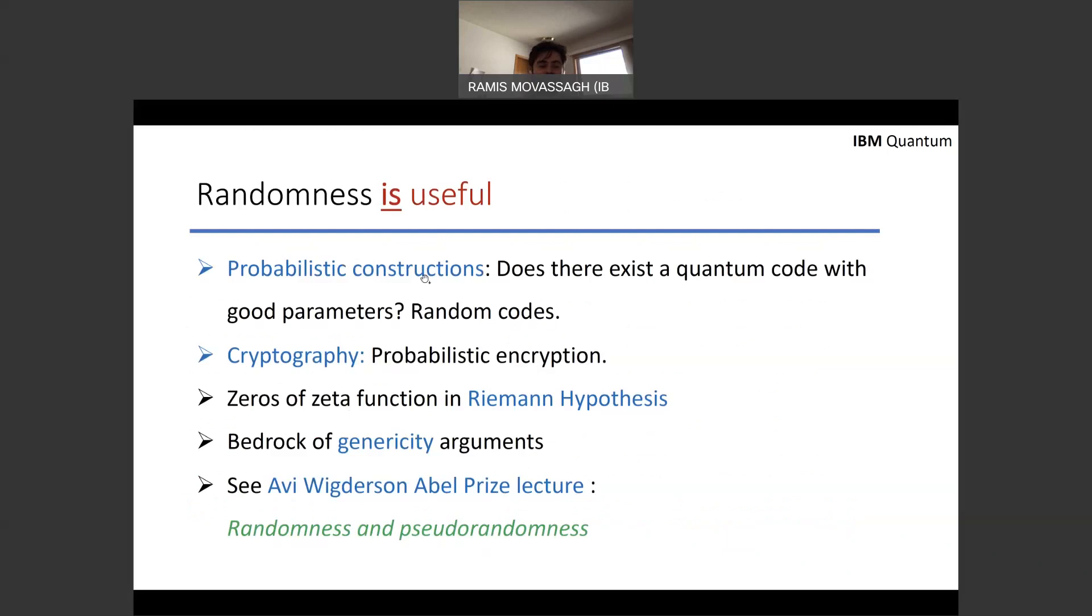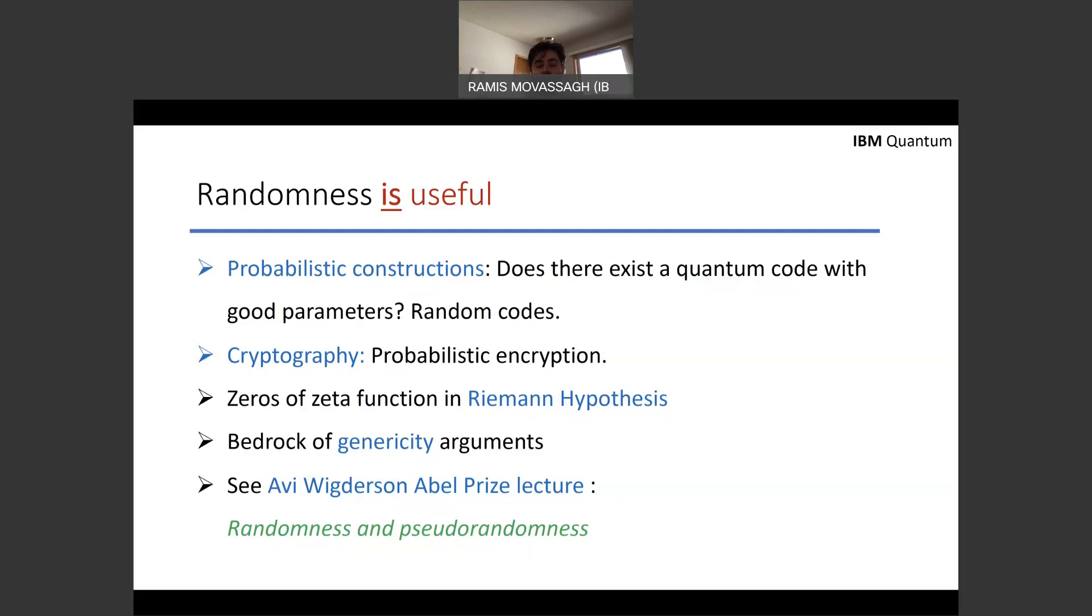I will not get into it, but in classical theoretical computer science, probabilistic constructions, cryptography, even in mathematics, you know, zeros of zeta function or Riemann hypothesis follow random matrix theory distributions and generosity arguments. And I invite you to look at Avi Wigderson's Abel Prize lecture, a beautiful lecture on randomness and pseudo randomness, where he really shows how randomness is useful in all sorts of things.